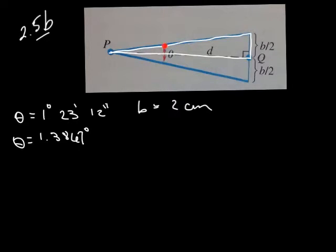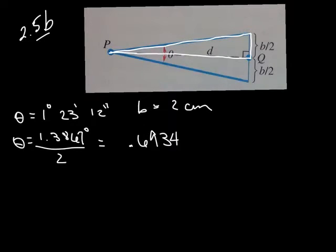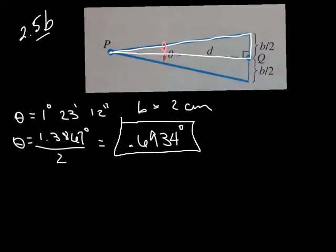If we take this angle of 1.3867 degrees, we're going to take half of it, because we're only looking for half — that's bisecting the angle. So the angle we're using in our trig calculation is 0.6934 degrees. We also know the line on this side is half of b, so in this case it's just 1. That length is going to be 1.